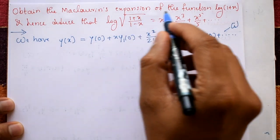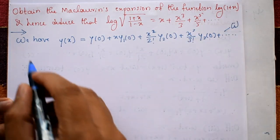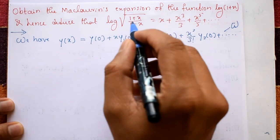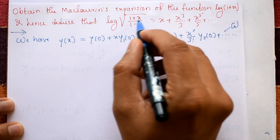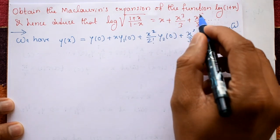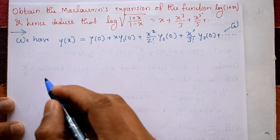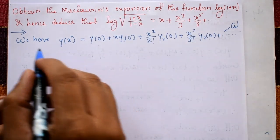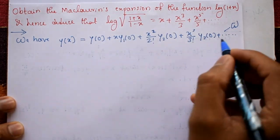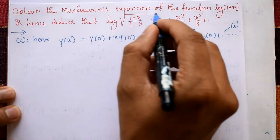Obtain the Maclaurin's expansion of the function log(1+x), and hence deduce that log of the square root of (1+x)/(1-x) is equal to x + x³/3 + x⁵/5 + ... Using Maclaurin's series, we have Maclaurin's expansion — call this equation number 1.